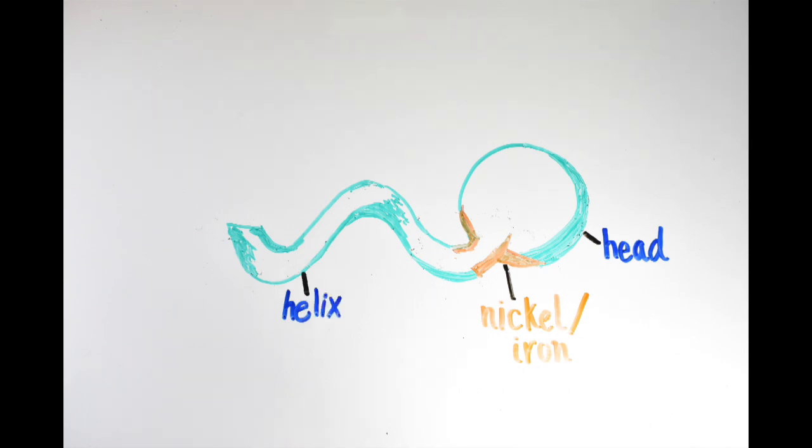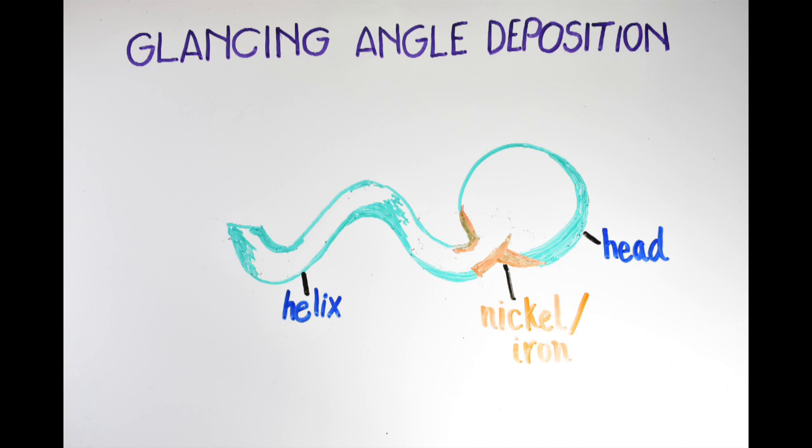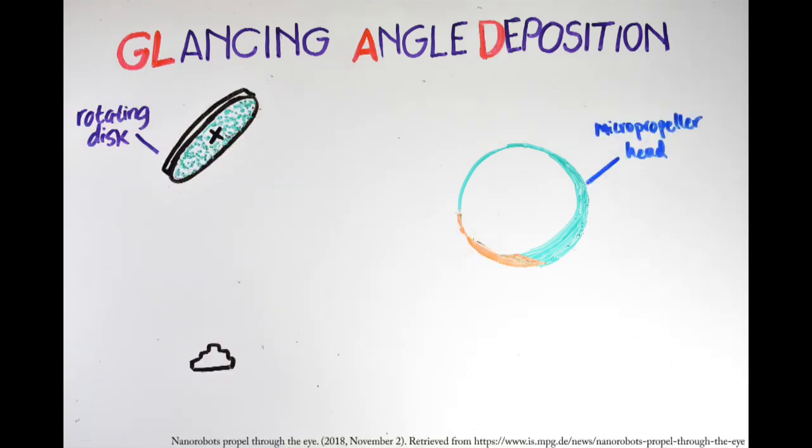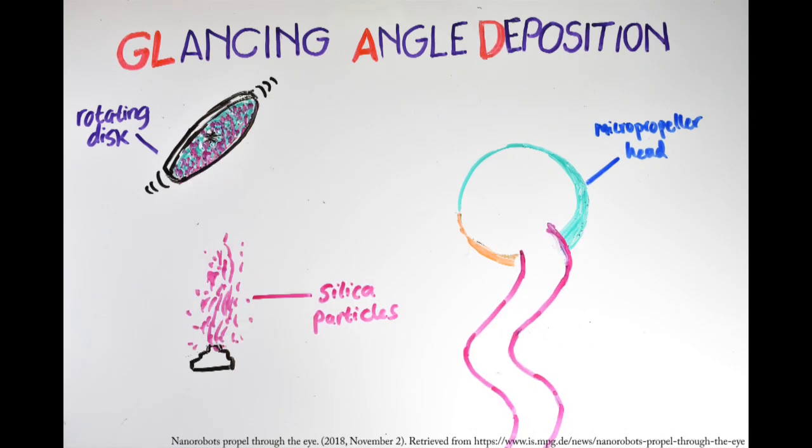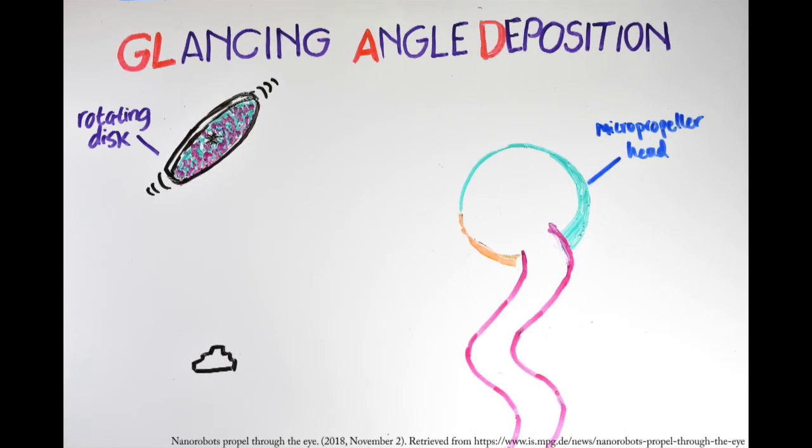The helical microstructures were created through glancing angle deposition, GLAD, a nanotechnology technique where a vaporized material is sprayed onto the micropropeller heads while they rotate at a specific angle, building up the tails in a helical shape.